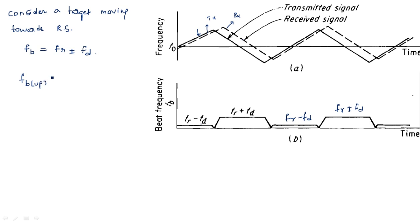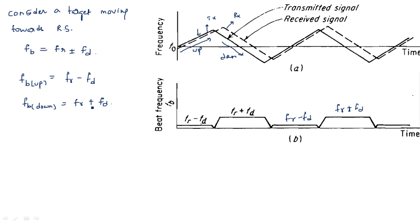We define: fb_up as the beat frequency during the rising period, and fb_down as the beat frequency during the falling period. So fb_up equals fr minus fd, and fb_down equals fr plus fd. The smaller difference corresponds to the minus sign and the larger difference corresponds to the plus sign, based on the rising and falling edges of the triangular waveform.